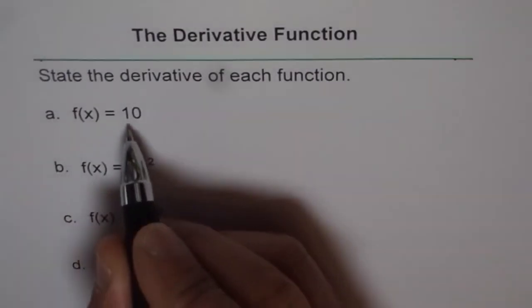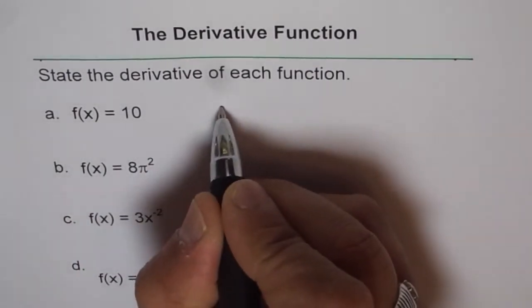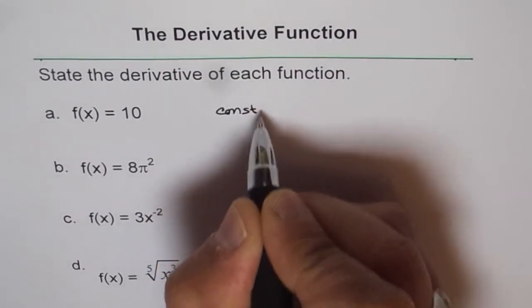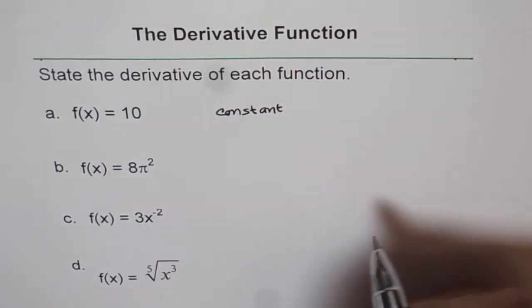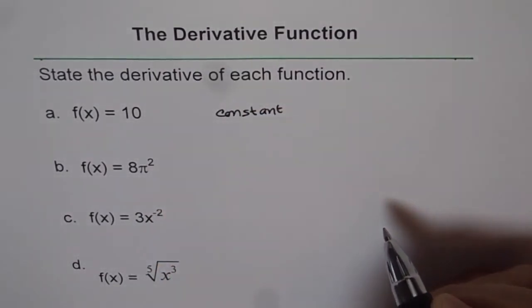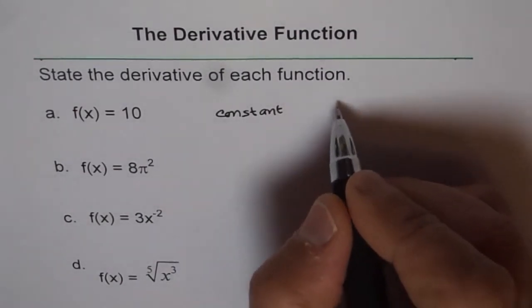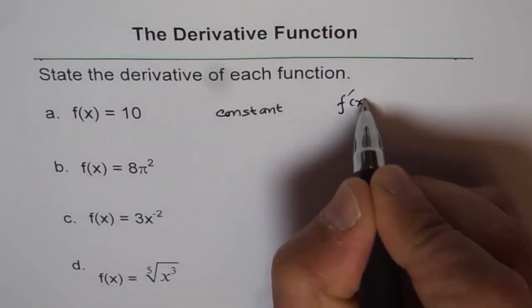f(x) equals 10. It is a constant. And if it is a constant, what do you expect derivative to be? Derivative will be 0. So f dash, the derivative will be 0.